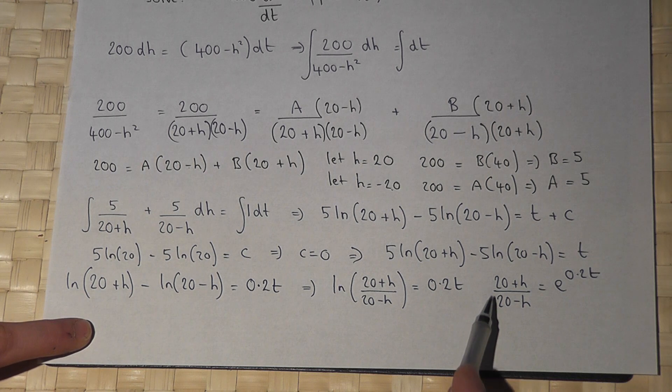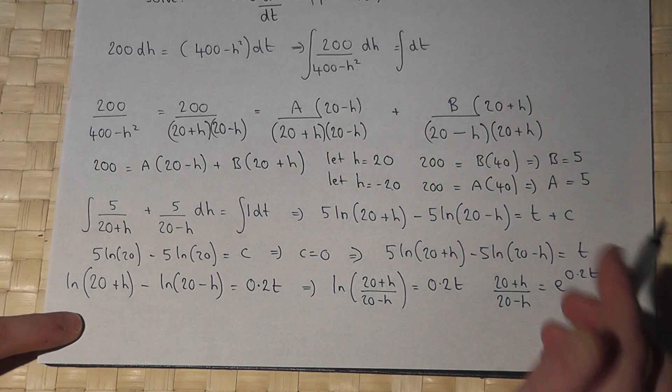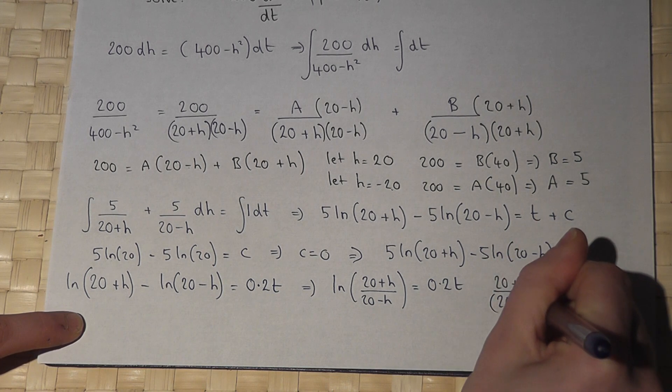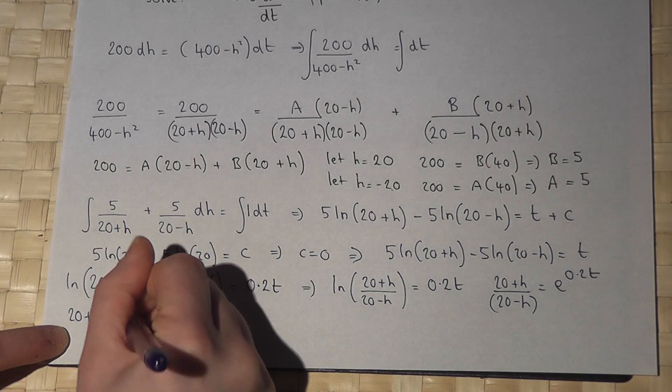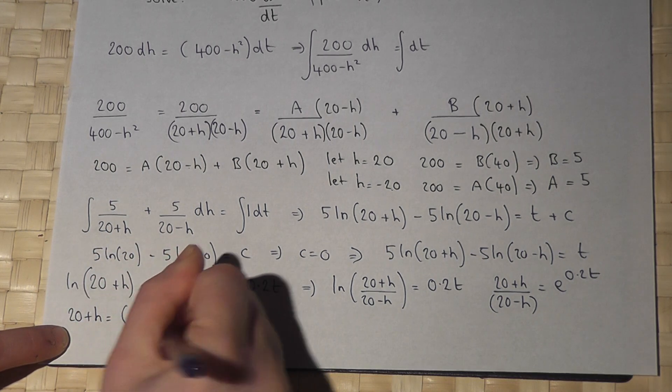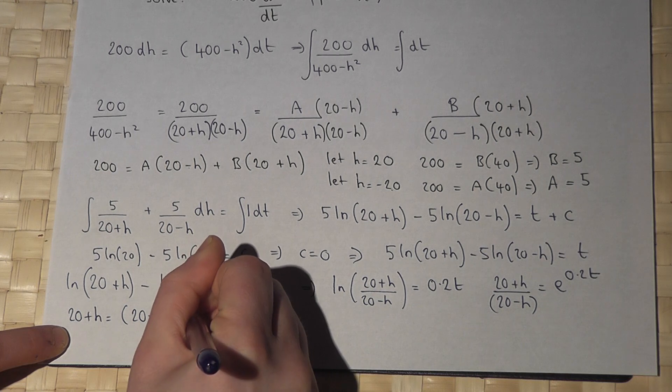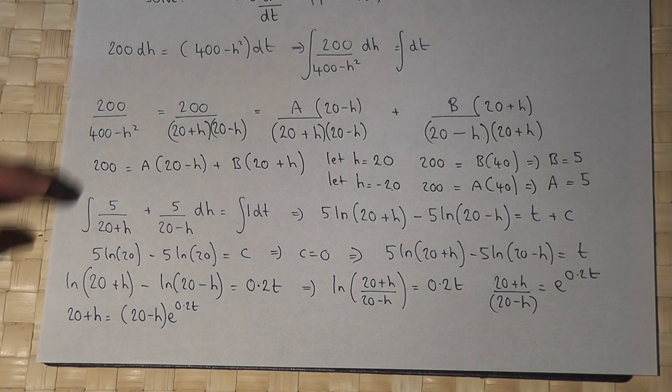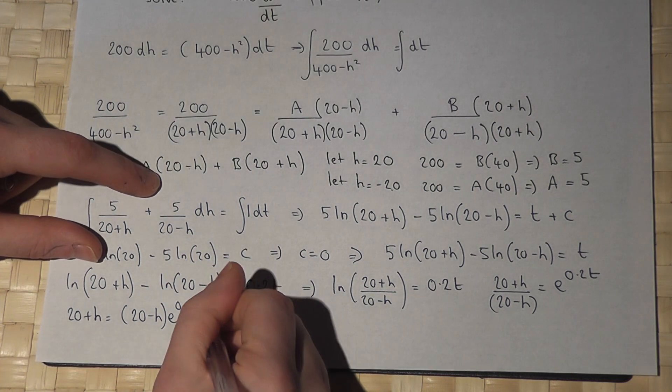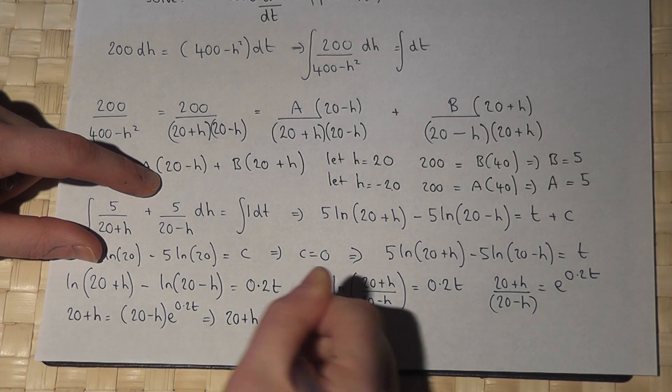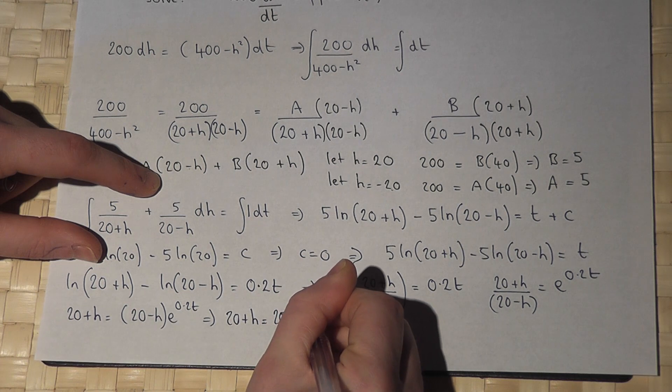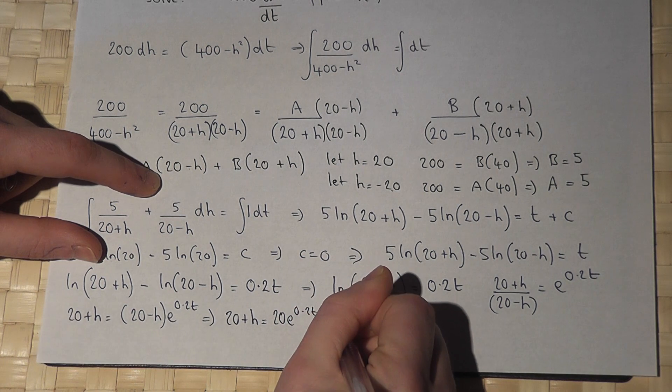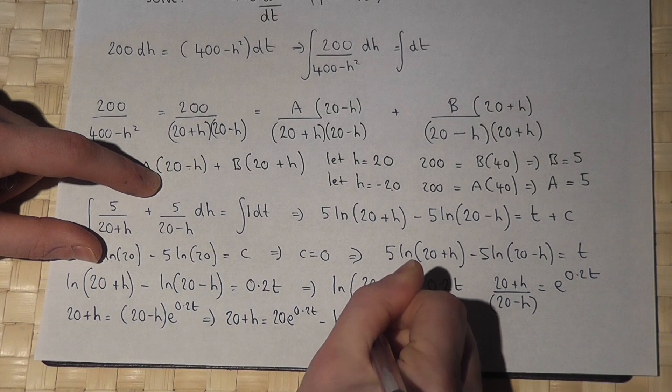Now, to get h equals, I must rearrange this equation. So I multiply by 20 minus h. So 20 plus h equals 20 minus h times e to 0.2t. If I then expand this, I get 20 plus h equals 20 e to the 0.2t minus h e to 0.2t.